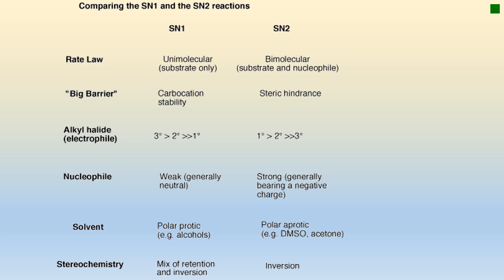The reactivity of alkyl halides: in SN1, tertiary alkyl halides are more reactive than secondary alkyl halides, which are far more reactive than primary alkyl halides. In SN2, primary alkyl halides are more reactive than secondary, which are far more reactive than tertiary alkyl halides. Nucleophile: a weak nucleophile favors the SN1 mechanism, while a strong nucleophile favors an SN2 mechanism. Solvent: a polar aprotic solvent favors SN1, while a polar aprotic solvent favors SN2. Stereochemistry: during SN1 there is a mixture of retention and inversion of stereochemistry, but in SN2 there is only inversion of stereochemistry.